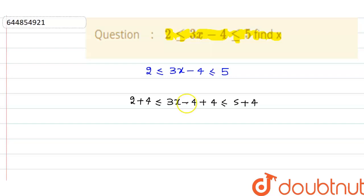This minus 4 and plus 4 will be cancelled out, so we have 6 less than equal to 3x and this is less than equal to 9.